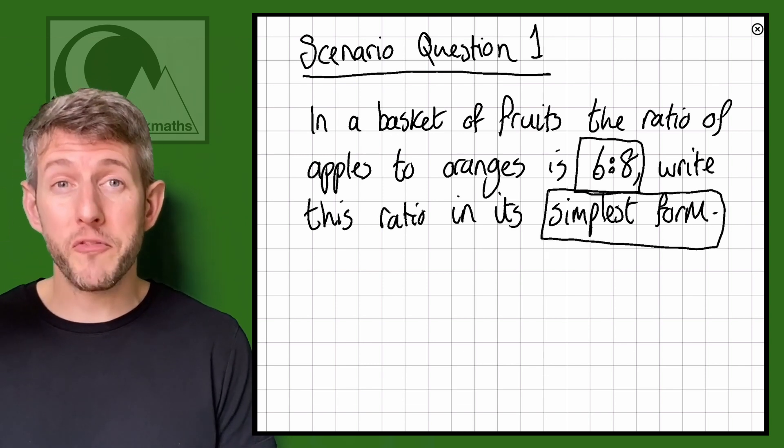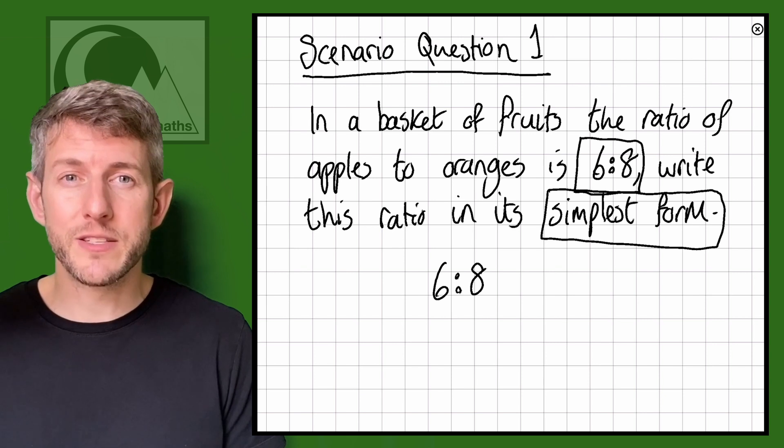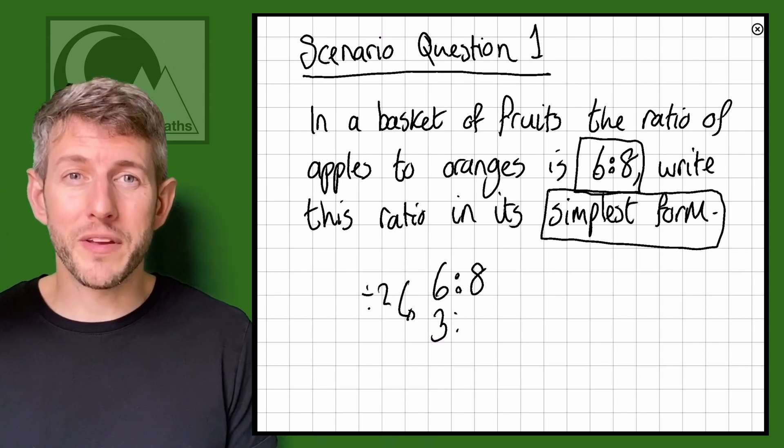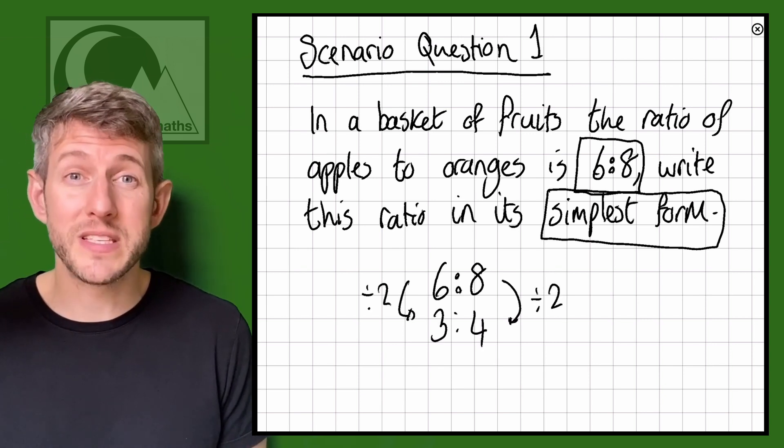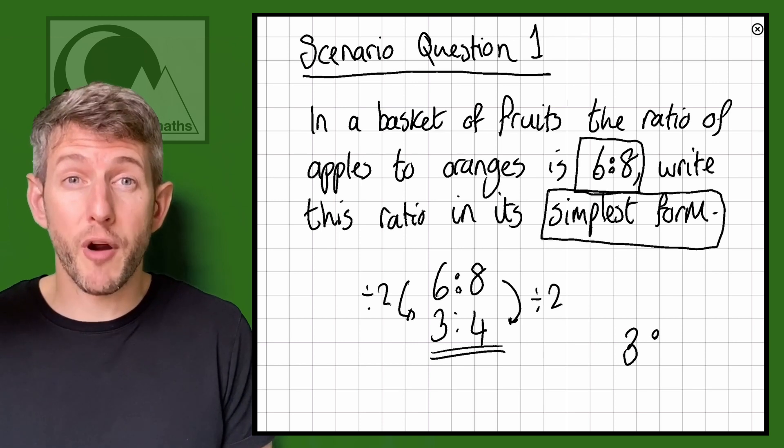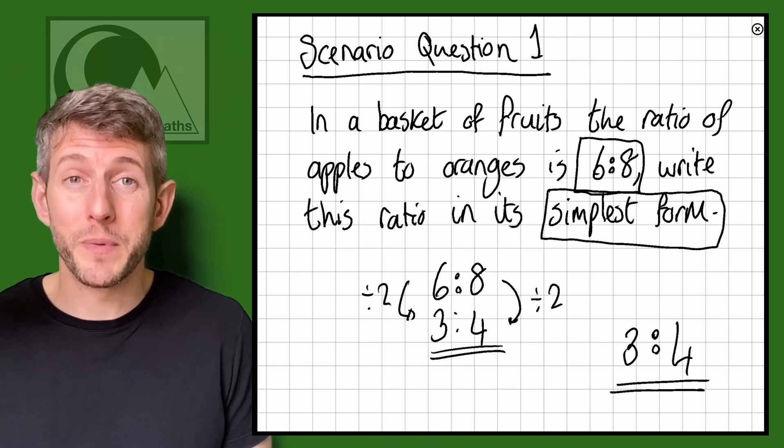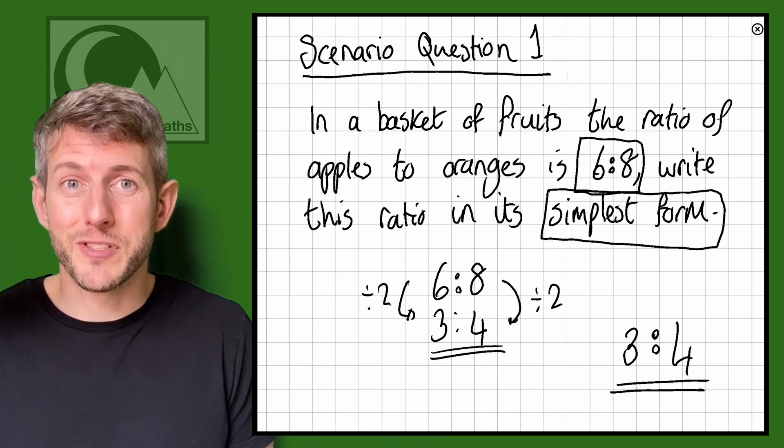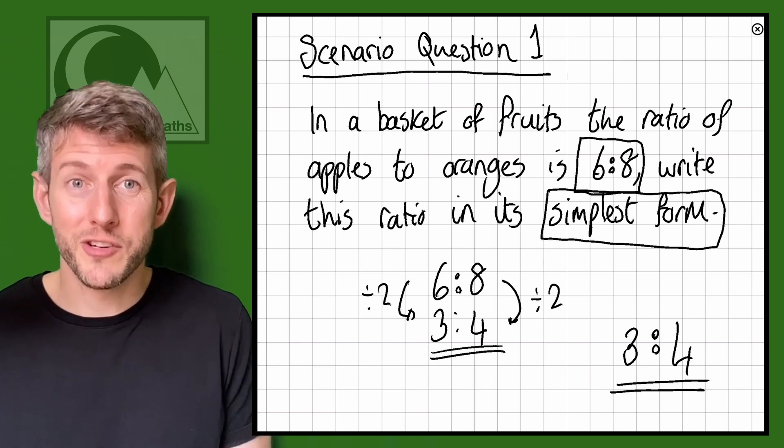So 6 to 8, they can both be halved, that becomes 3 to 4 and can't do anything more than that. They're both as low as they can go. I mean 3 is a prime number so that means there's no more factors that definitely can't be divided anymore so we just have to stop there. So the answer to this question is 3 to 4.